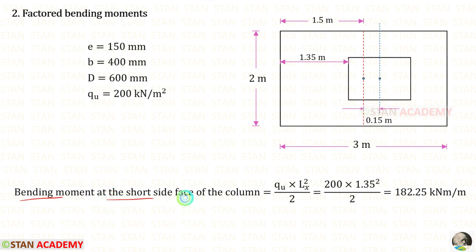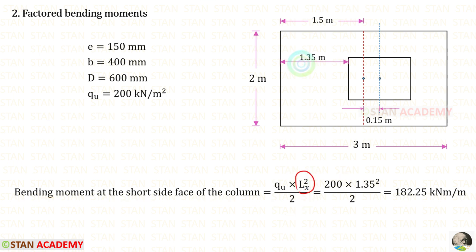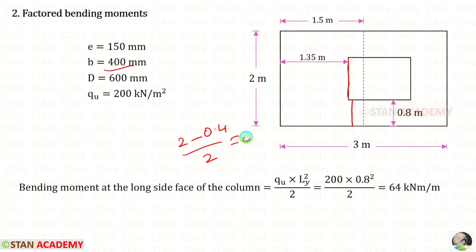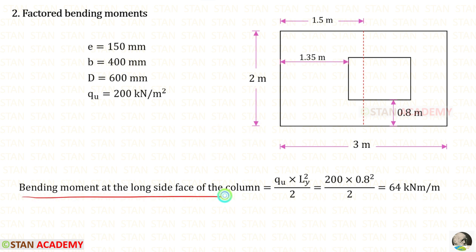Let us find the bending moment at the short side face of the column. Using the formula with QU = 200 kN/m² and LX = 1.35 m, we get the moment as 192.25 kN·m/m. Now for the long side face of the column: the distance LY = (2 − 0.4)/2 = 0.8 m. The bending moment at the long side face is QU × LY²/2 = 200 × 0.8²/2 = 64 kN·m/m.